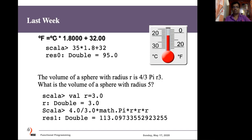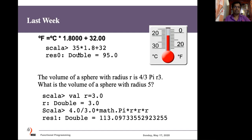For example, in the first problem we want to convert centigrade into Fahrenheit. There is a direct equation: the centigrade value multiplied by 1.8 plus 32 gives the conversion. So if you want to convert 35 centigrade into Fahrenheit, you can type it directly — 35 multiplied by 1.8 plus 32 — and Scala will tell you the result.